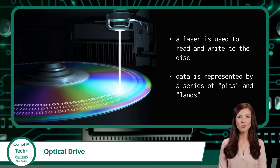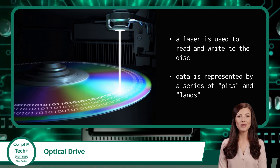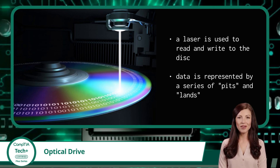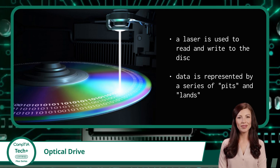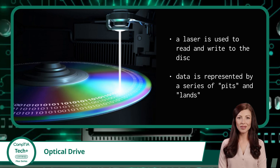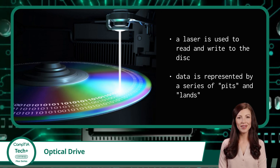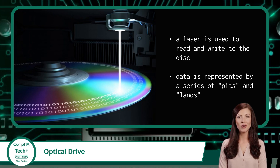Similarly, when writing data to a disk, the optical drive uses a laser to etch or burn information onto the disk's surface. This process creates pits and lands on the disk that represent the data being written. Once the data is written, it can be read by any compatible optical drive.